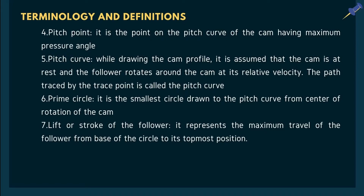The pitch point is the point on the pitch curve of the CAM having the maximum pressure angle. The pitch curve: while drawing the CAM profile, it is assumed that the CAM is at rest and the follower rotates around the CAM. The path traced by the trace point is called the pitch curve. The prime circle is the smallest circle drawn to the pitch curve from the center of rotation of the CAM. The lift or stroke of the follower represents the maximum travel of the follower from the base circle to its topmost position.